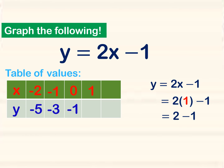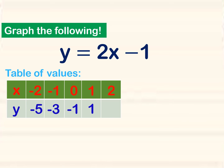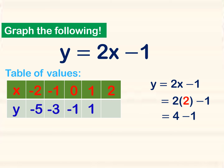When x is equal to 1, we copy the equation and substitute the value: 2 times 1 is 2, and 2 minus 1 is 1, so y is equal to 1. When x is equal to 2, y is equal to 3.